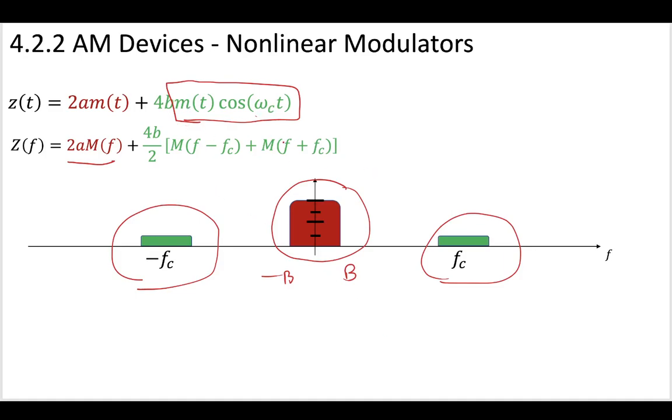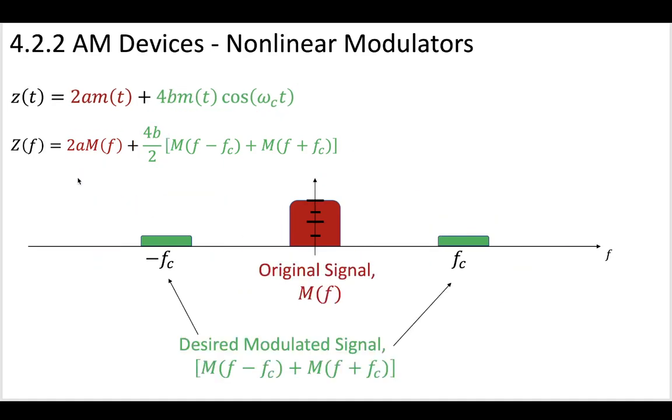The only so-called harm that we can say we've done is that we've changed this leading coefficient a little bit. We've changed it to 4b over 2, where b is some constant from our power series approximation. So this is really good, because now some of our signal is exactly what we want. Some of our signal is a modulated message. Our original signal is in the middle, our desired modulated signal is out at the edge.